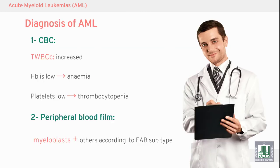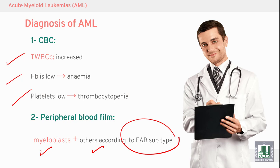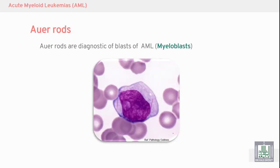The diagnosis of AML is similar to ALL. On complete blood count (CBC), we find leukocytosis, low hemoglobin, low platelets (thrombocytopenia), and blast cells — myeloblasts or other cells according to FAB subtypes. The diagnostic hallmark of AML is the presence of Auer rods.